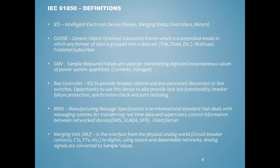The merging unit is the interface from the physical analog world — your circuit breakers, currents, voltages — to the digital network. It takes analog signals and converts them to sample values. Most merging units also have I/O associated with them. Since they're out in the yard, they typically have current and voltage inputs as well as binary inputs that they convert to a digitized GOOSE message.